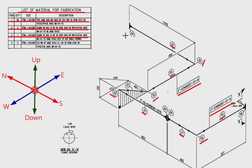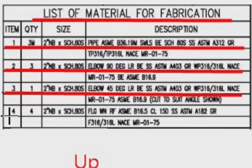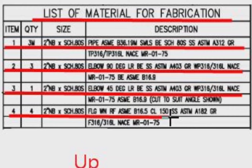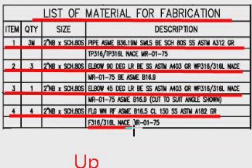Detail number four: the quantity is 4 pieces, 2 inches schedule 80S flanges, weld neck, raised face, class 150. The material is stainless steel, grade 316L.